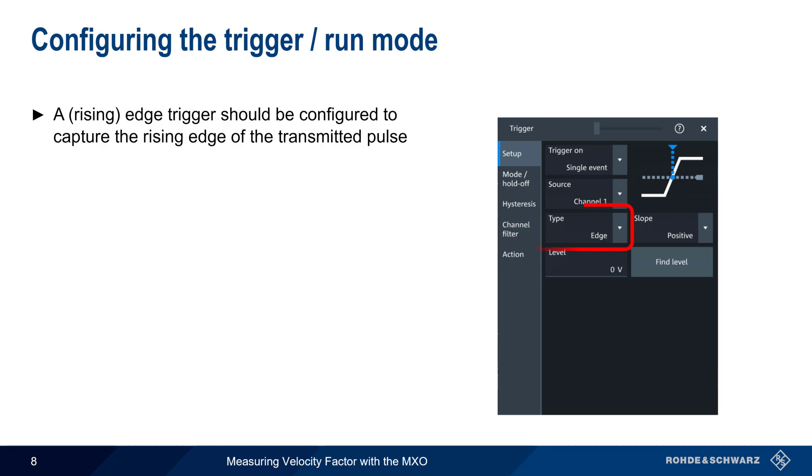The best way to capture the transmitted and returned pulse is to configure an edge trigger, or more specifically, a rising edge trigger. The configured trigger level is not critical as long as it reliably detects at least one of the rising pulse edges.